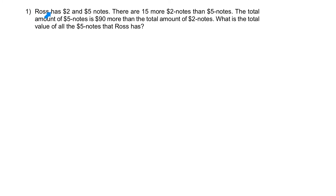Question 1. Ross has $2 and $5 notes. There are 15 more $2 notes than $5 notes. The total amount of $5 notes is $90 more than the total amount of $2 notes. What is the total value of all the $5 notes that Ross has? Essentially, the story is saying these are the two different types of notes, and currently there are 15 more $2 notes than the $5 notes.